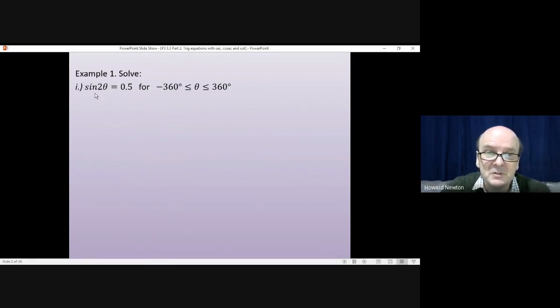So for example, if you had sine 2θ = 0.5 and you had to find all of the solutions between minus 360 degrees and plus 360 degrees, how would you do it?